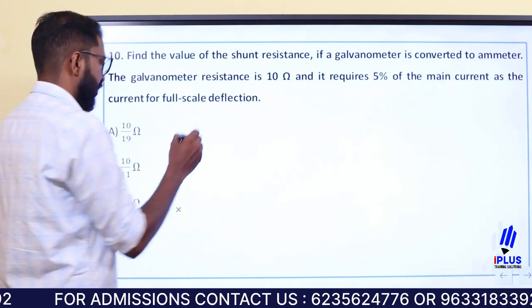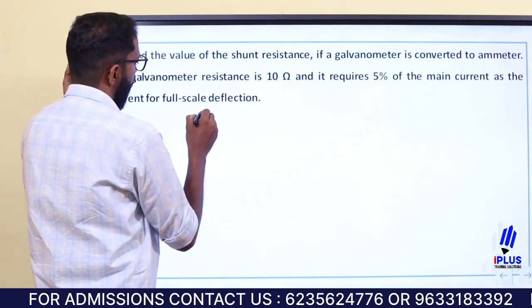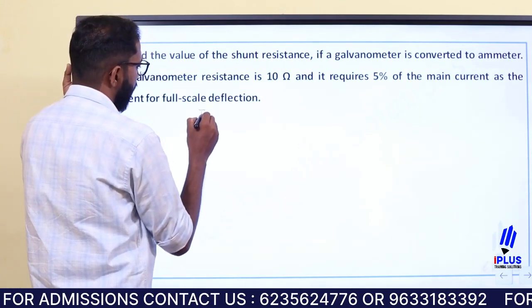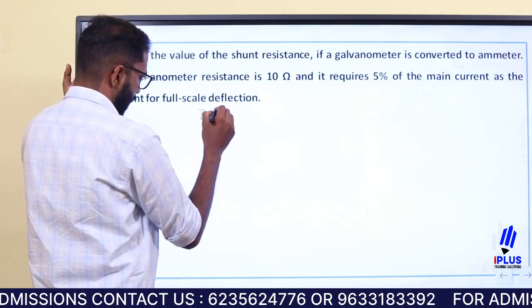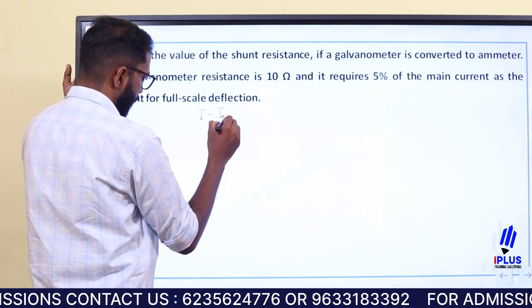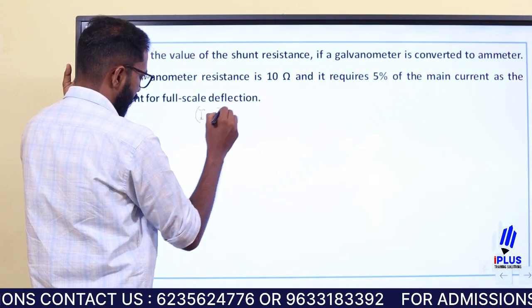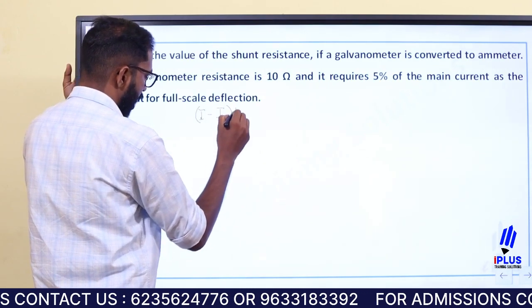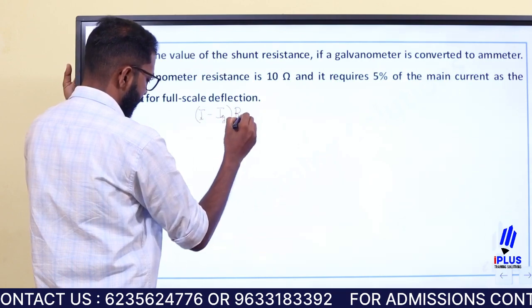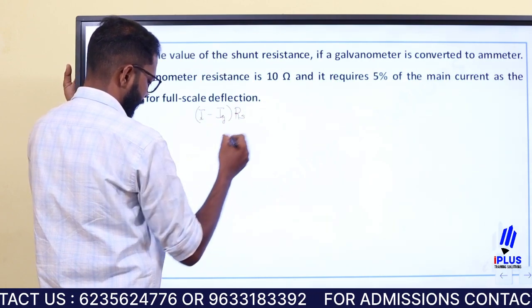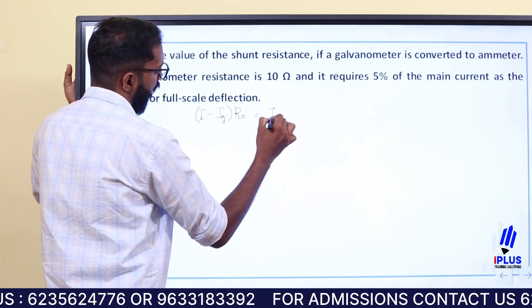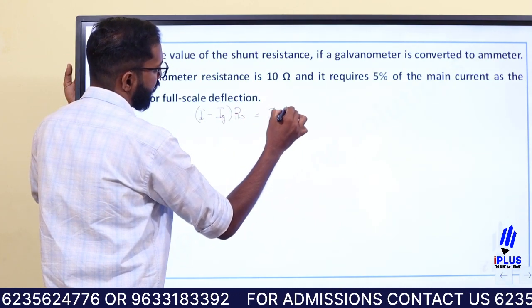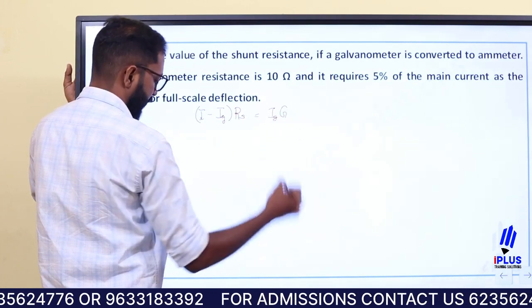The equation is: (i minus ig) into Rs is equal to ig into g. This is the governing equation.